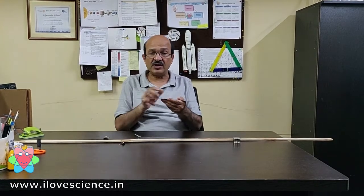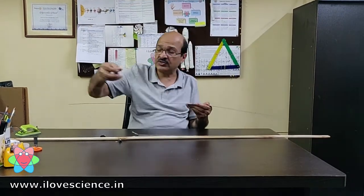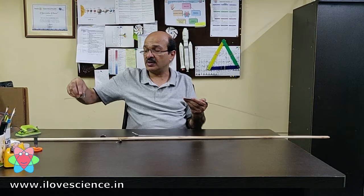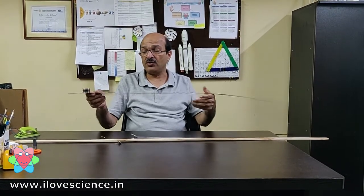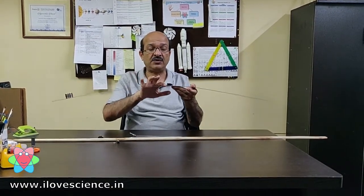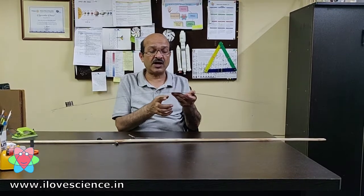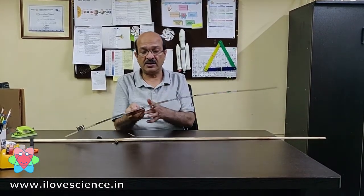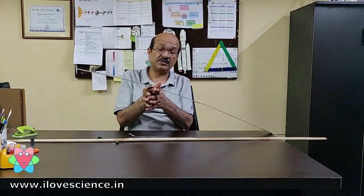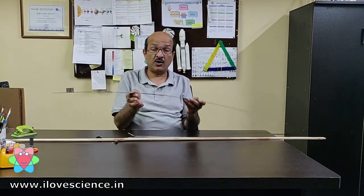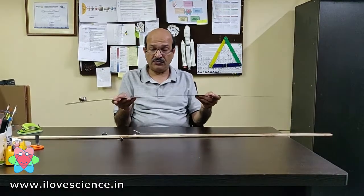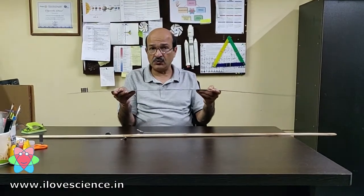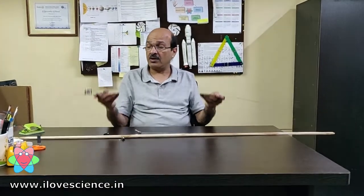We will put some magnets on one side. Now we don't know the weight of these magnets and we don't know where the center of gravity is. If we try to balance it somewhere, it will either tilt on this side or that side.